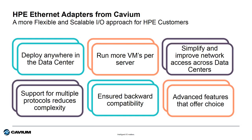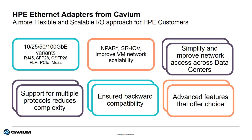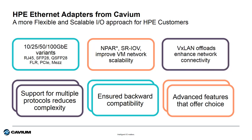So why Kavium for HPE customers? First, customers can deploy anywhere in the data center. With a variety of bandwidth options, connectivity options, and form factors, we are supported in all the different HPE server systems. Customers can run more VMs per server with our virtualization optimized technology. They can simplify their connectivity to their networks with the tunnel offload capabilities in all of our adapters.